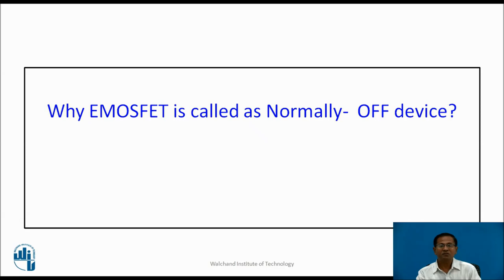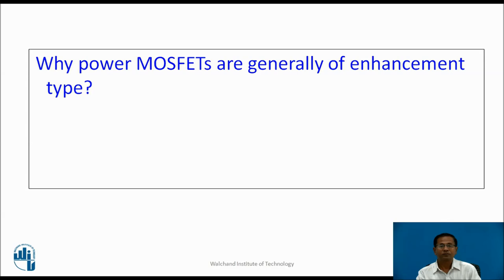Enhancement type MOSFET is called a normally OFF device because when the input voltage VGS is zero, the current remains zero. Power MOSFETs are generally of Enhancement type because in the depletion type MOSFET, when VGS = 0 the current is maximum, whereas in the Enhancement type MOSFET, when VGS = 0 the current is zero and the MOSFET is in the OFF state. Only when VGS crosses VT does the MOSFET conduct, making Enhancement type MOSFETs practical for power applications.